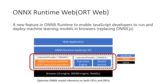So what's ONNX Runtime Web? It's a new feature in ONNX Runtime to enable JavaScript developers to run and deploy machine learning models in a browser. Some of you might have heard about ONNX.js. ONNX Runtime Web is the upgraded version, which is going to replace ONNX.js with improved inference performance, model coverage, as well as development experience.